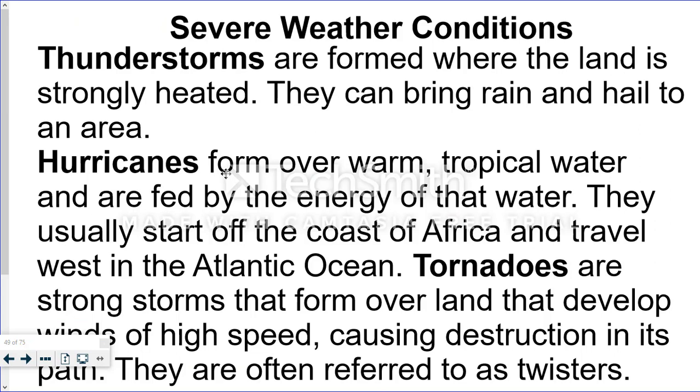Now, some of the severe weather conditions that you've learned throughout the years are thunderstorms, hurricanes, tornadoes, sleet, and freezing rain. Tornadoes are formed where the land is strongly heated. I'm sorry, thunderstorms are formed where the land is strongly heated, and they can bring rain, hail, and cloudy weather to an area.